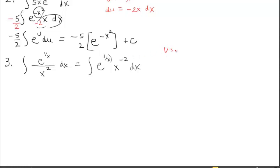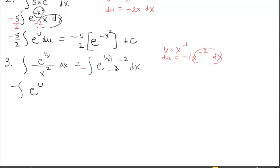So u equals 1 over x, which is x to the negative 1. The derivative using the power rule gives negative x to the negative 2 dx — that's convenient because that's exactly what we need; we just bring in a negative 1. Multiplying by negative on the outside and converting: negative integral of e to the u du. The anti-derivative is negative e to the u, with u replaced by 1 over x, plus C.